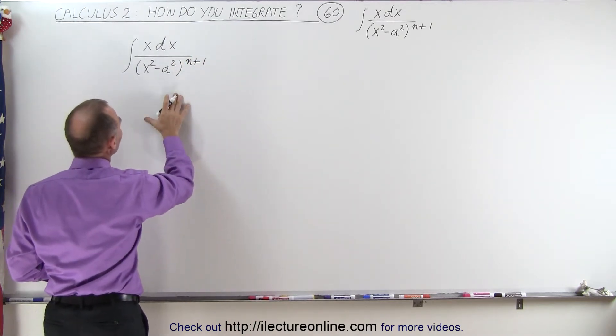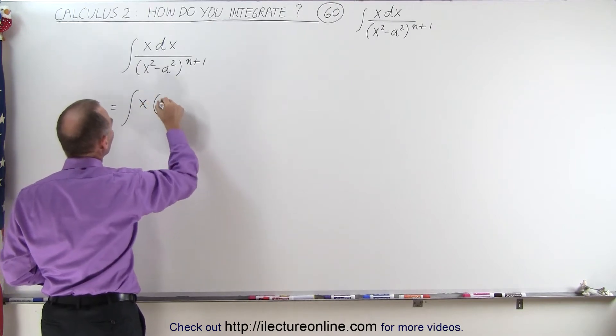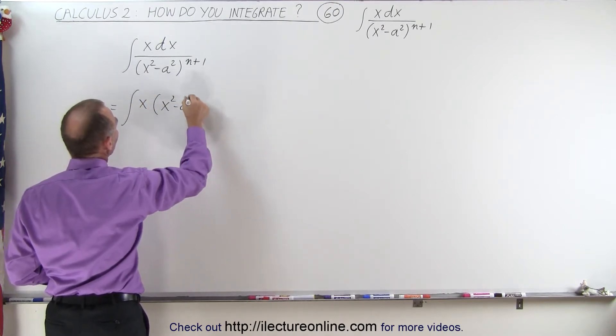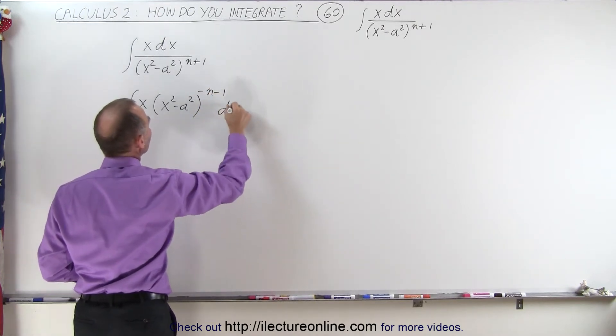And we're going to write this instead as follows: the integral of x times x squared minus a squared to the minus n minus 1 power times dx.